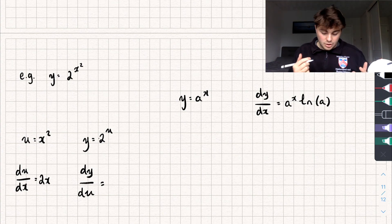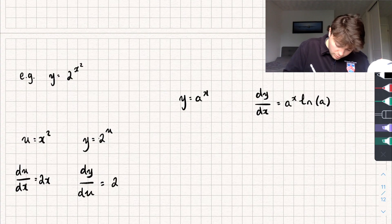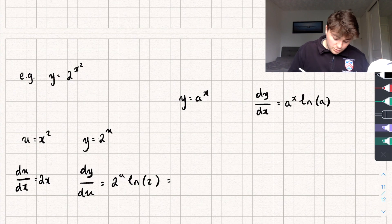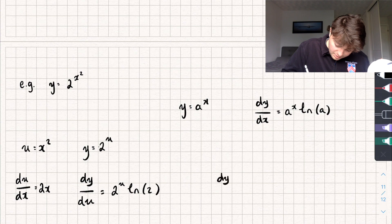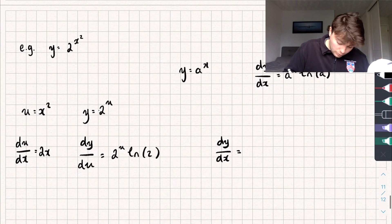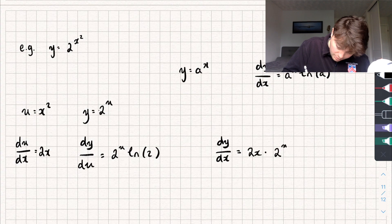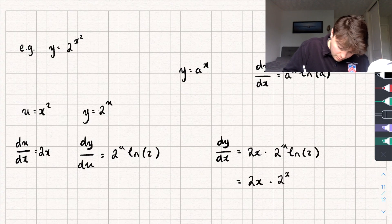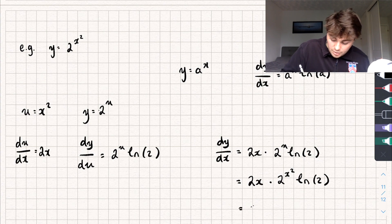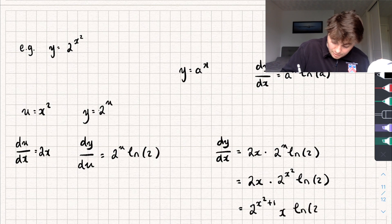For dy/du, we're just using the derivative rule that we worked out a second ago. Our a is going to be equal to 2, and instead of x we've got u, so it's just going to be equal to 2 to the power of u multiplied by the natural log of 2. Multiplying these two things together, dy/dx is equal to 2x multiplied by 2 to the power of x squared multiplied by the natural log of 2, which you could simplify to 2 to the power of x squared plus 1, multiplied by x, multiplied by the natural log of 2.